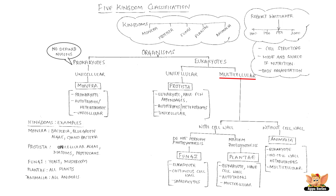Multicellular organisms with cells having cell walls and which perform photosynthesis are the ones in kingdom Plantae. They are autotrophs and use chlorophyll for photosynthesis. All plants around us are under kingdom Plantae.